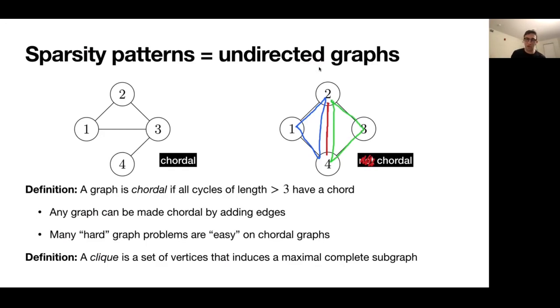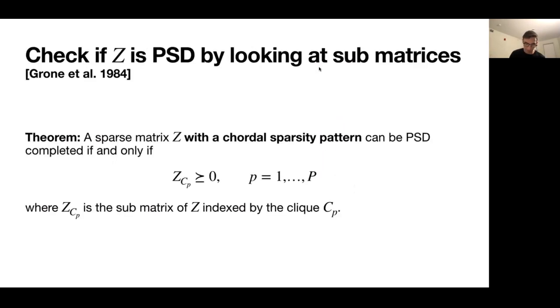So now equipped with these definitions, we can go back to that tool that we wanted for the SDP. And we have a check that Z is positive semi-definite by looking at sub matrices, specifically if we have a sparse matrix Z with a chordal sparsity pattern. So that means that if we look at the undirected graph that corresponds to that sparsity pattern, it's a chordal graph, that matrix has a positive semi-definite completion if and only if the sub matrices indexed by the cliques or the sub matrices that correspond to the cliques are all positive semi-definite.